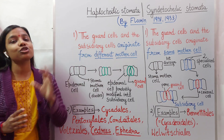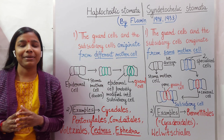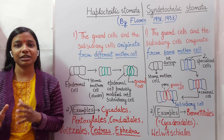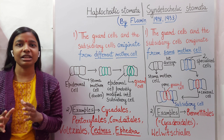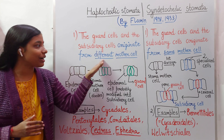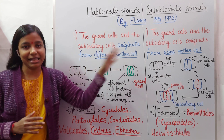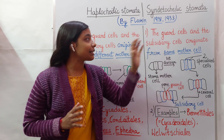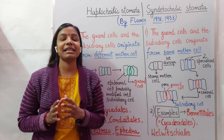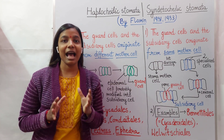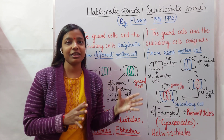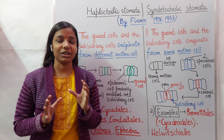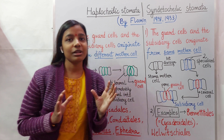In the case of haplochelic stomata, the guard cells and the subsidiary cells originate from different mother cells. However, in the case of syndetochelic type, the guard cells and the subsidiary cells originate from the same mother cell.